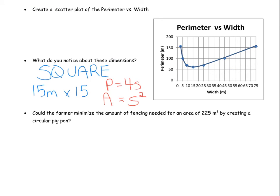And just like we did earlier on, I want to take a look at could I actually minimize the amount of fencing further for an area of 225 by creating a circular pig pen? Would you want to create a circular pen? It's probably not very often used but it is possible. Notice here in this one I am given an area so I'm going to start with my area formula for a circle. And I know that the area is 225. And I am going to use that to actually solve for what would the radius be in this case.